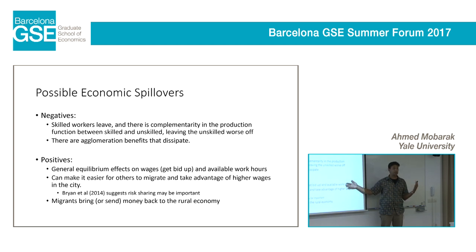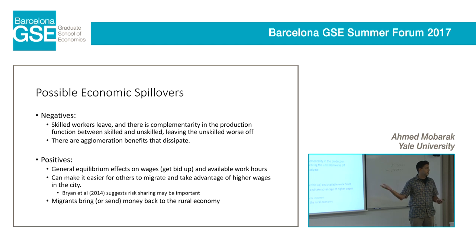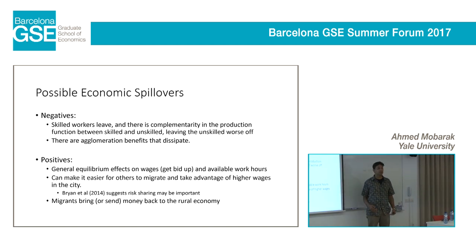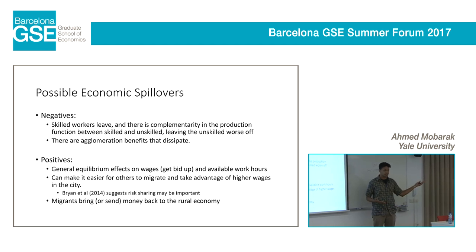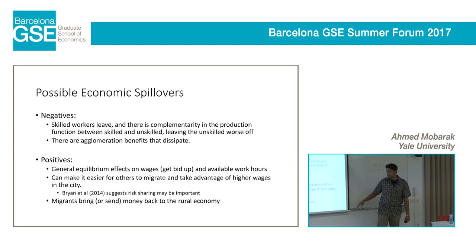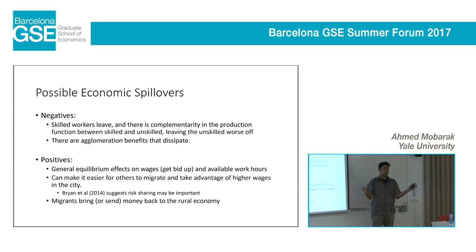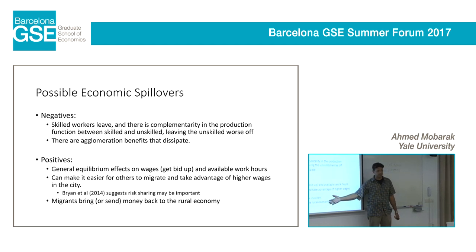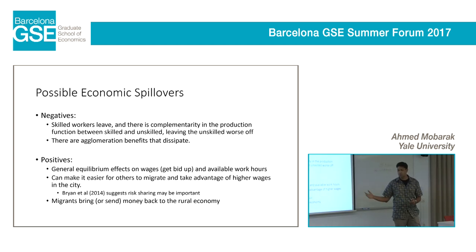But we also have good reasons to believe there might be positive effects if some people leave. First, there are general equilibrium labor market effects — lots of people leave, that's going to make it easier for the people who remain behind to find work and it's going to bid their wages up. It might also make it easier for others to also migrate and take advantage of higher urban wages. We know that networks are important in determining migration patterns, and in our earlier work, risk is an important determining factor on whether people decide to move. If you move in a group or other people are already there to help you, that risk sharing might be an attracting factor. And of course migrants might bring money back or send money back home. So it could go in either direction — we'll model all this and look at what the data tell us.